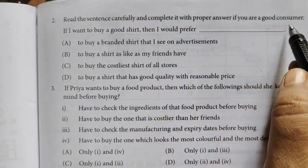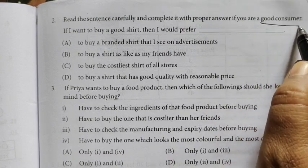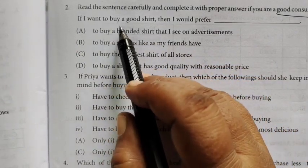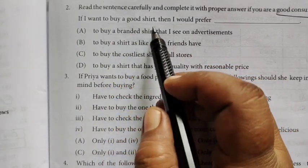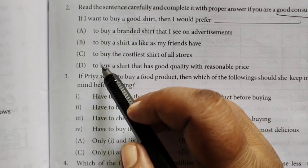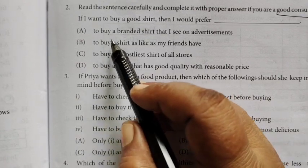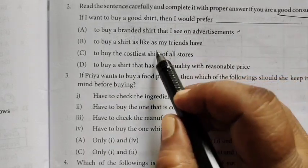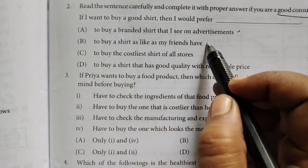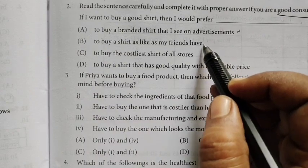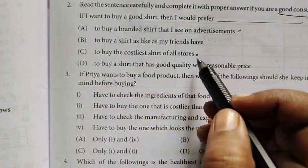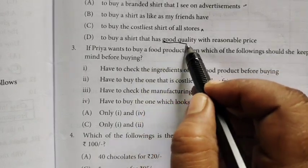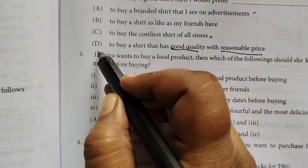If you are a good consumer, you can say what is correct. I want to buy a good shirt, what are you following? To buy a branded shirt that I see on advertisement, to buy a shirt as I like my friends, to buy a costly shirt, to buy a shirt that has good quality with reasonable price and good quality.